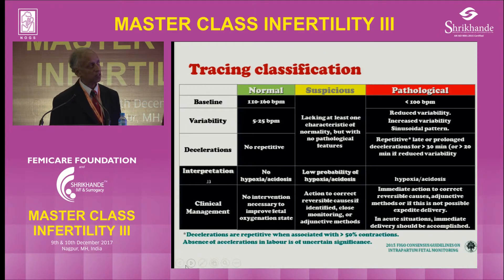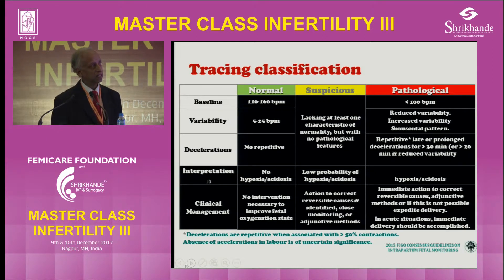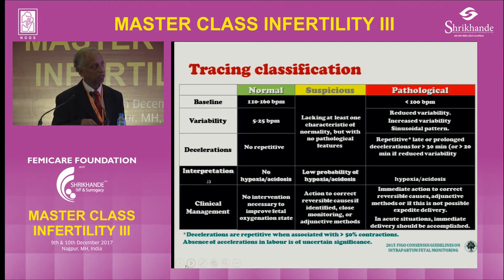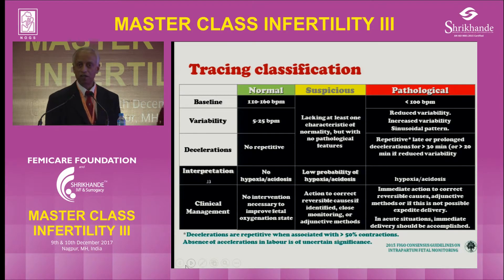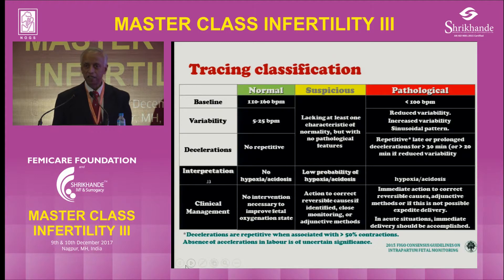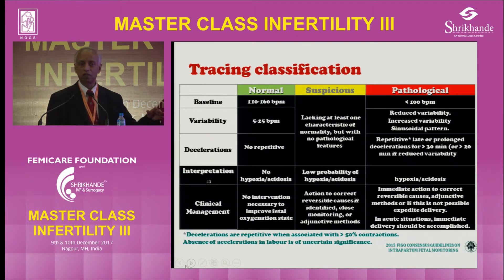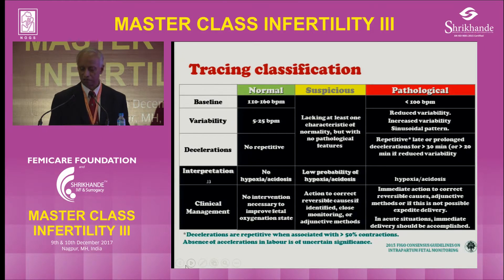Pathological means the heart rate is abnormal, variability is either increased or reduced, and there are repetitive late or long decelerations. Once it is repetitive and more of these features are present, there is a high degree of hypoxia and acidosis. Take corrective actions, and if it is not working, think about delivery. So the idea is: one feature abnormal — observe; two features — do something, and if it doesn't improve, deliver.